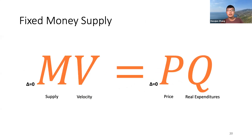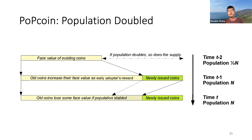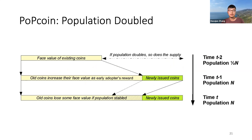We again use the equation of exchange to analyze this monetary policy: since we have a fixed money supply, and assuming velocity and real expenditure are more or less stable, the price level will be stable as well. What happens if the population changes? If the population doubles from t-2 to t-1, the PopCoin monetary policy will ensure that the money supply proportionally changes with the size of the population — so the money supply doubles as well.